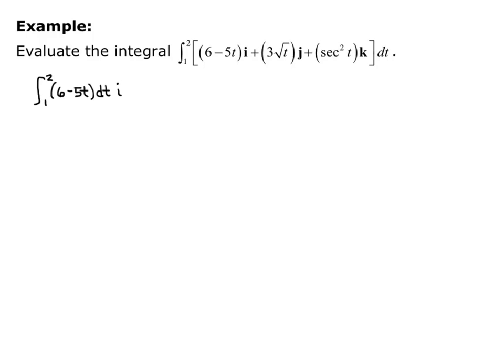This equals the integral from 1 to 2 of 6 minus 5t dt times i, plus the integral from 1 to 2 of 3t to the 1/2 dt times j. Notice I'm writing the square root of t as t to the 1/2, so I can use the power rule of integration.